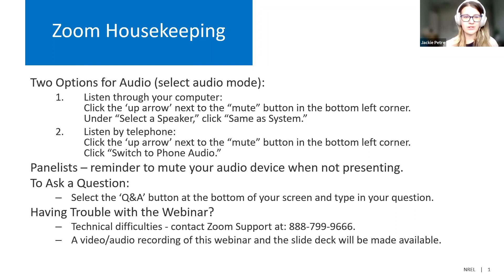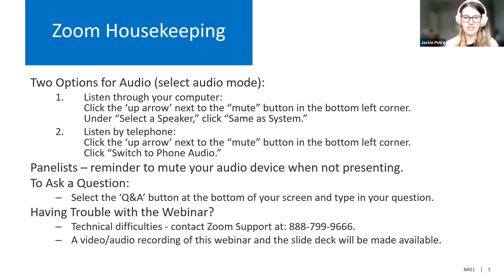Once again, we're going to quickly go through a couple of Zoom housekeeping items before we get started. Today you have two options for connecting to audio. You can listen through your computer, or you can also listen by telephone if one of those options isn't working. You can find the icon in the bottom left corner with the microphone and select the up arrow next to it. That will allow you to change your audio settings throughout the presentation.